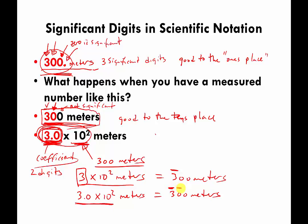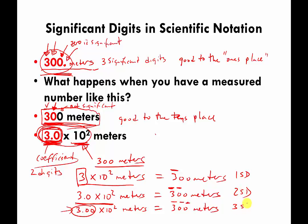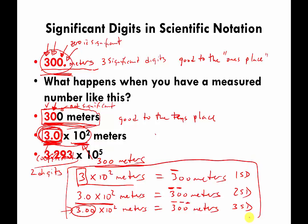So 3 × 10² meters says only the first digit is significant — one significant digit. 3.0 × 10² meters says two significant digits, knowing the hundreds and tens place. 3.00 × 10² meters says three significant digits. To count significant digits in a number written in scientific notation, look at the coefficient and count the number of digits shown — that number equals the significant digits in the measurement.